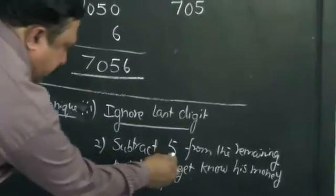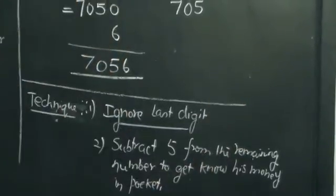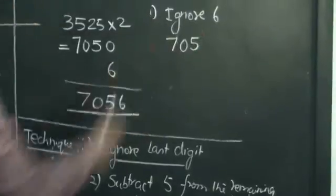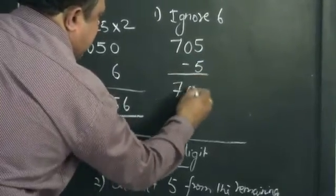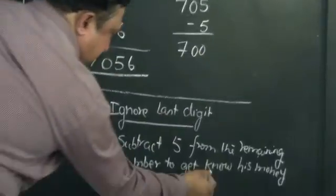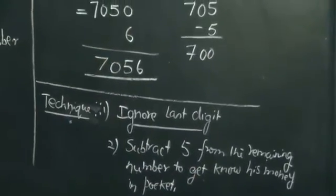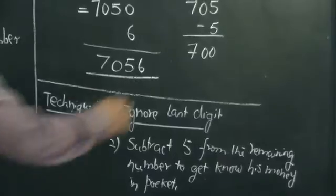Then subtract 5 from this remaining number. The remaining number is 705. You are going to subtract 5, and you are getting 700. And this number is the actual value of the money the person would be having in his wallet.